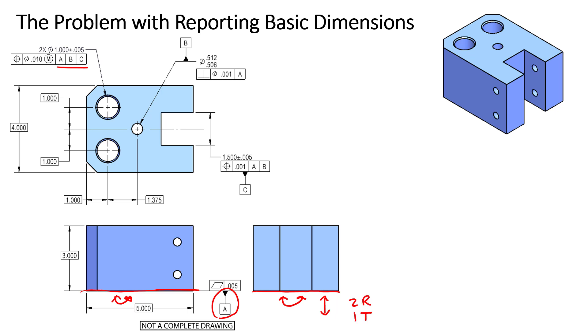Now let's move to datum feature B. Datum feature B we know is this hole right here. And as a cylinder, a cylinder can lock down four degrees of freedom: two rotations, two translations.